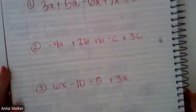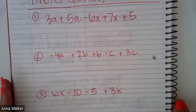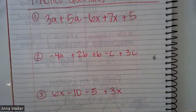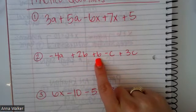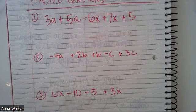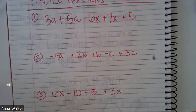Flip over to where you are writing down your practice questions. You have three of them. On all of these, you are just combining your like terms and simplifying this expression to the least terms as possible. Number one: 3A plus 5A minus 6X plus 7X plus 5. Number two: negative 4A plus 2B plus B minus C plus 3C. Number three: 6X minus 10 minus 5 plus 3X. Work on practicing combining your like terms. Check your answers in the table of contents. Please let me know in class if you have any questions. Have an awesome day.